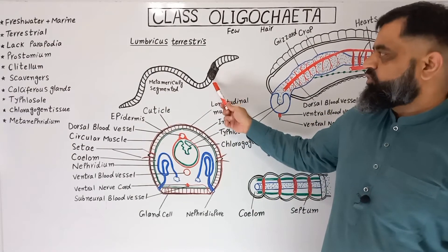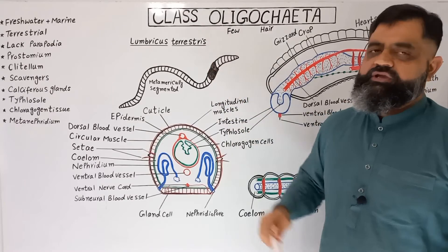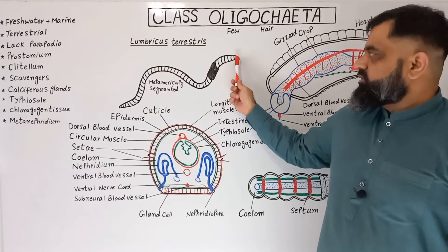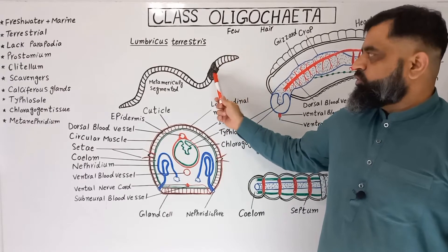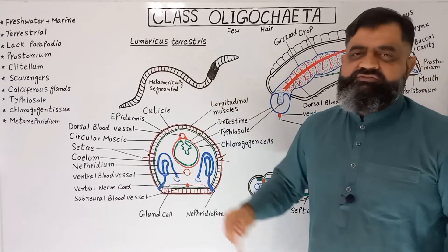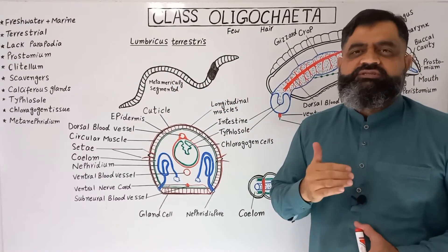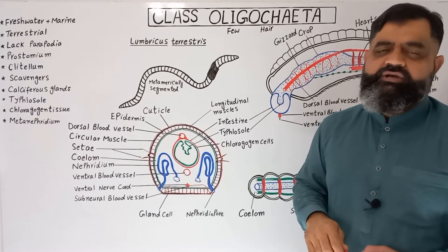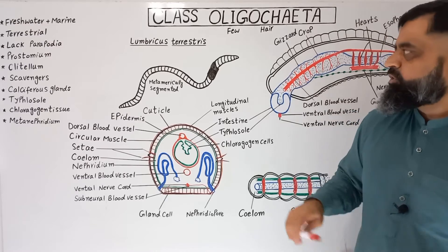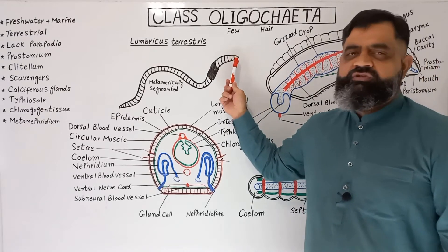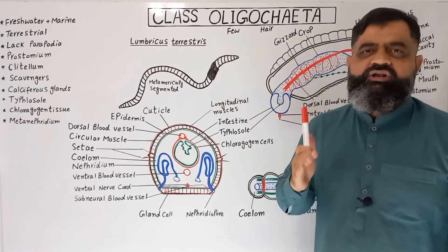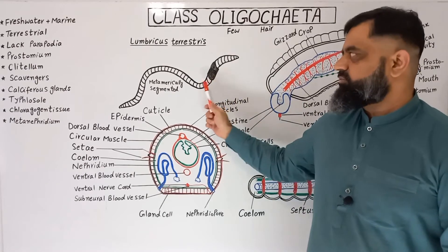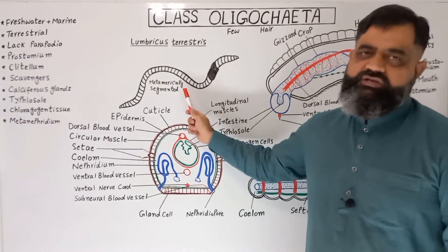This is the body of an earthworm known as Lumbricus terrestris. Its body is divided into different segments which can be seen on the exterior of the body and are also present in the interior. Animals which have their body divided into equal segments are known as metamerically segmented.